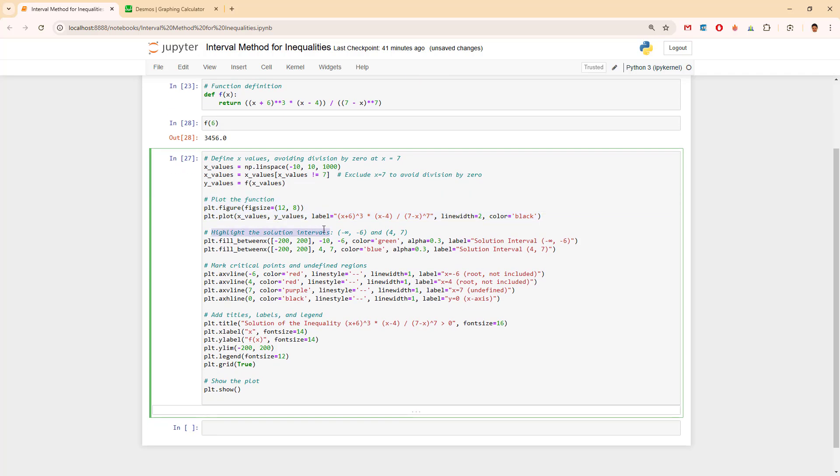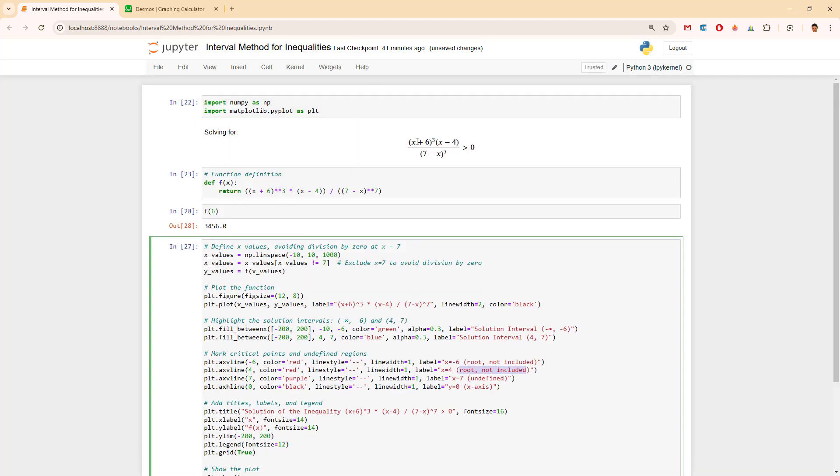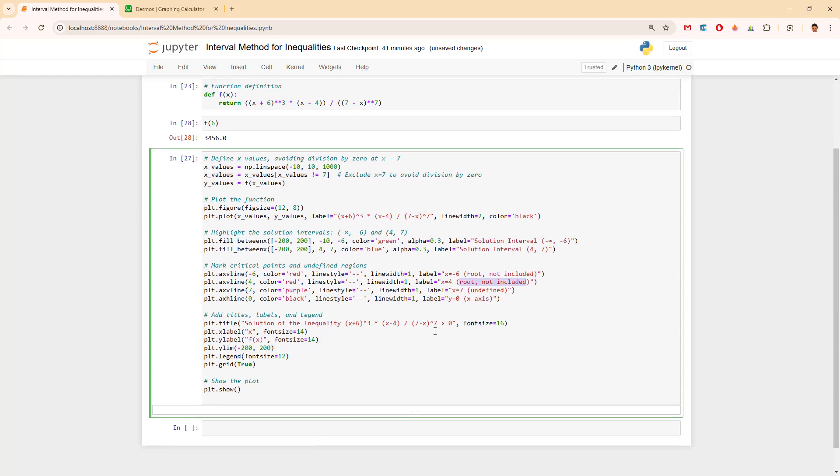We highlight the solution intervals, mark critical points, and undefined regions. In our case, the roots shouldn't be included because the roots are the case when y is 0. Y is the answer of the whole thing. And we are not interested in the 0, we are interested in the cases where it is bigger than 0. So yes, the roots are not included. This 7 is undefined for a thing that I have already explained twice. But I will mention it again.